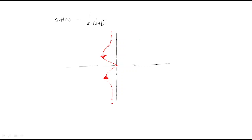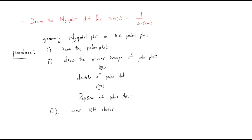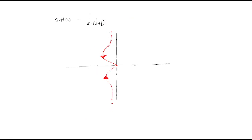The third point is to cover the RH plane. Covering the RH plane means you complete this region. You draw this portion here, and with this you have the full shape like this.